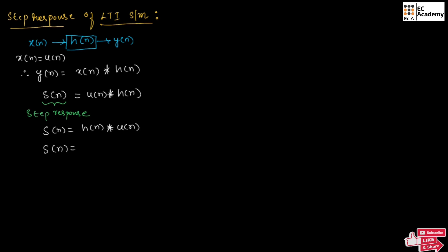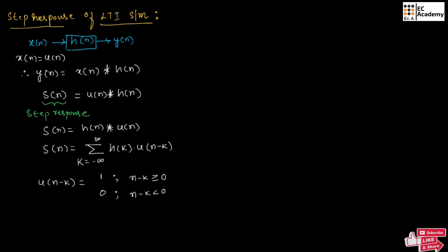We can write S of n is equal to the summation from k equals minus infinity to infinity of H of k into U of n minus k. In this expression, U of n minus k will be equal to 1 for n minus k greater than or equal to 0, and 0 for n minus k less than 0. So n minus k greater than or equal to 0 means k is less than or equal to n, and n minus k less than 0 means k is greater than n.